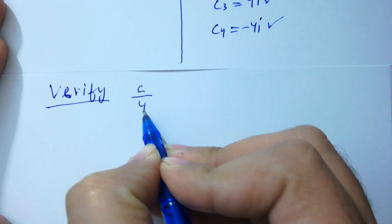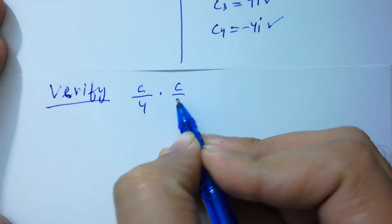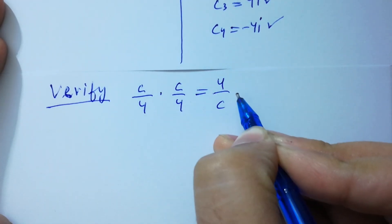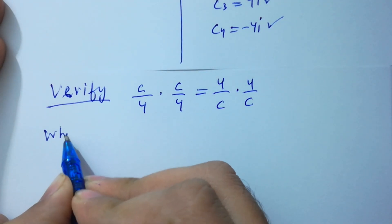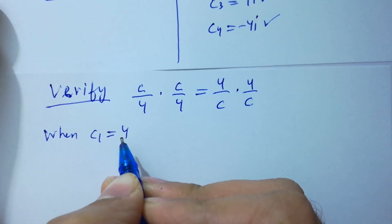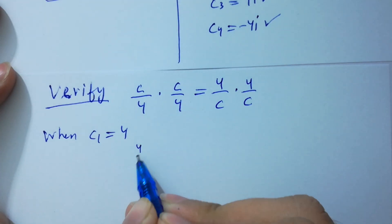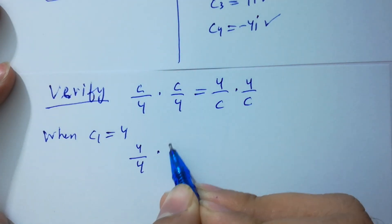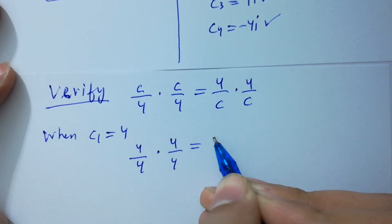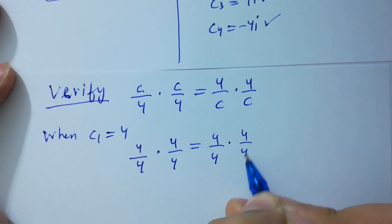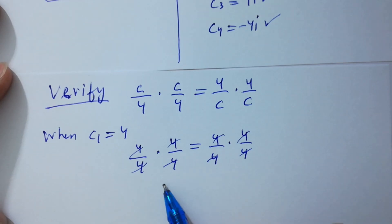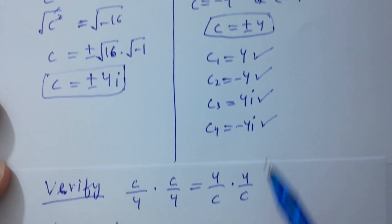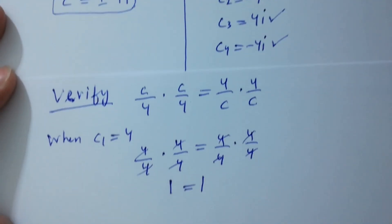Verify using (c/4) times (c/4) equals (4/c) times (4/c). When c1 equals 4, we have (4/4) times (4/4) equal to (4/4) times (4/4). The 4s cancel and we get 1 times 1 equals 1, which means c1 equals 4 is correct.